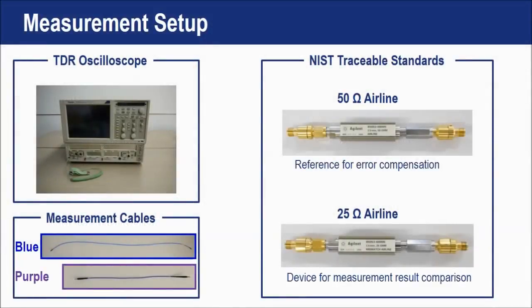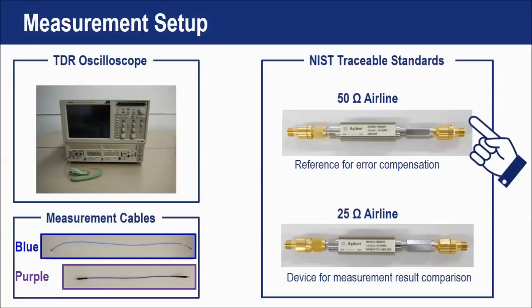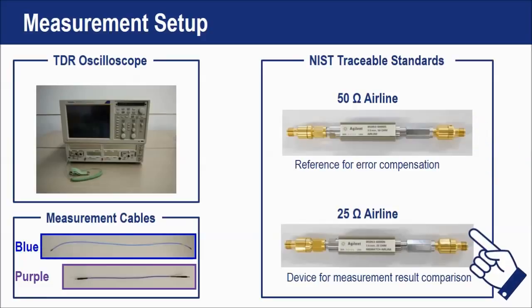Here is the measurement setup. We have a TDR oscilloscope with blue and purple measurement cables. These cables have different lengths and are made of different materials. We also prepared NIST traceable airlines — NIST stands for National Institute of Standards and Technology — so these airlines are traceable to the global standard of impedance. A 50 ohm airline is used as a reference to perform offset compensation, and a 25 ohm airline will be used as the device to compare measurement results after compensation.